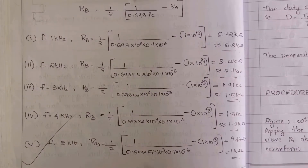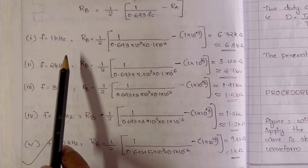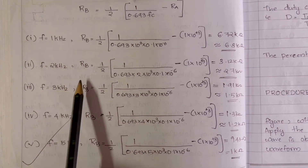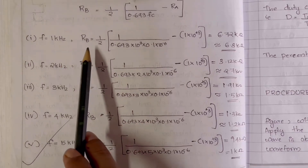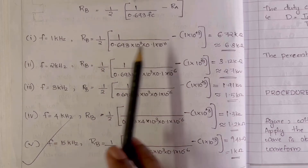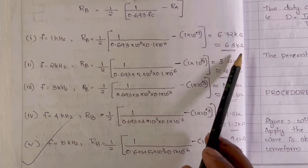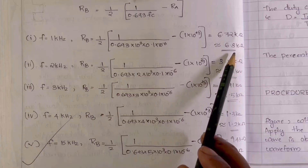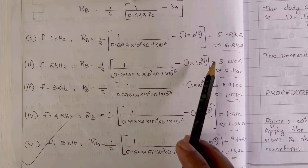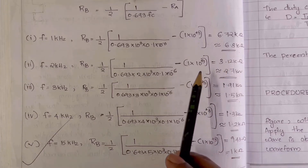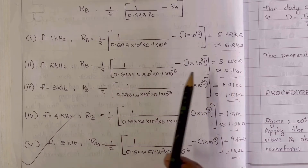We can design the circuit for different values of frequency such as 1 kHz, 2 kHz, 3 kHz, etc. For 1 kHz, the value of RB is approximately 6.7 to 6.8 kΩ. If 6.8 kΩ is not available, you can take the nearest standard resistance. For 2 kHz, it is calculated to be 2.7 kΩ, and it continues accordingly.